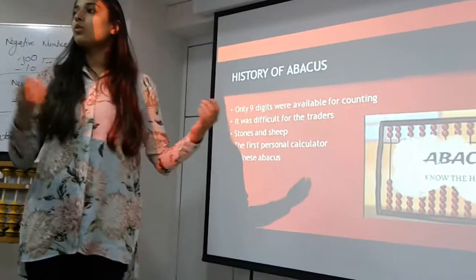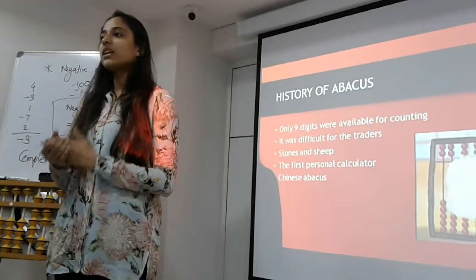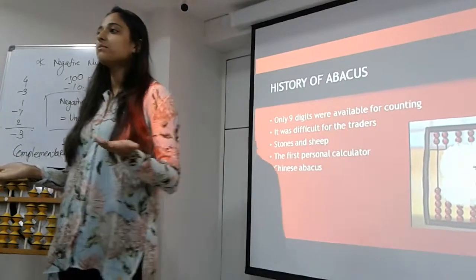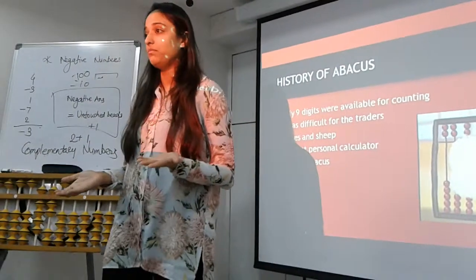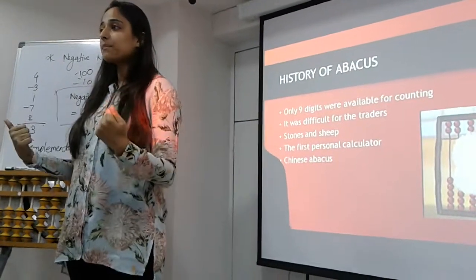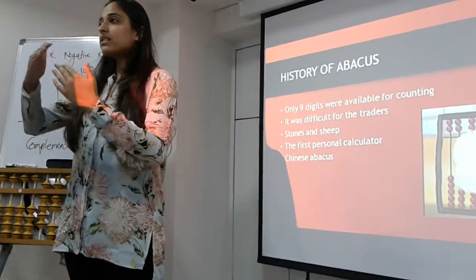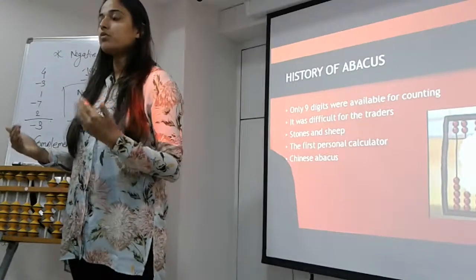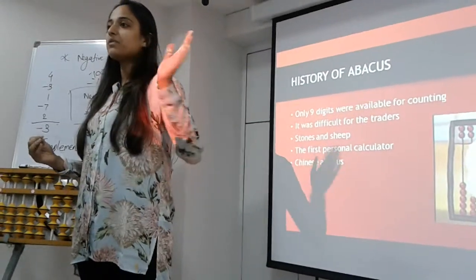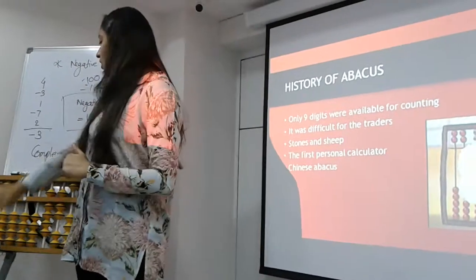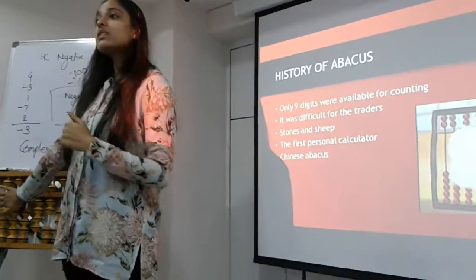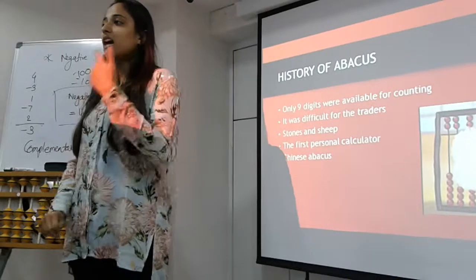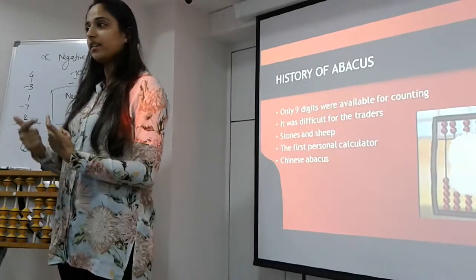But with stones and sheep, the problem was we didn't have unlimited stones available, we didn't have unlimited sheep available. Hence they had to come up with something that could go on till the digits that we know. So now we know counting till zillion, and hence on this Abacus you can solve till zillion. That is how the evolution of Abacus started.